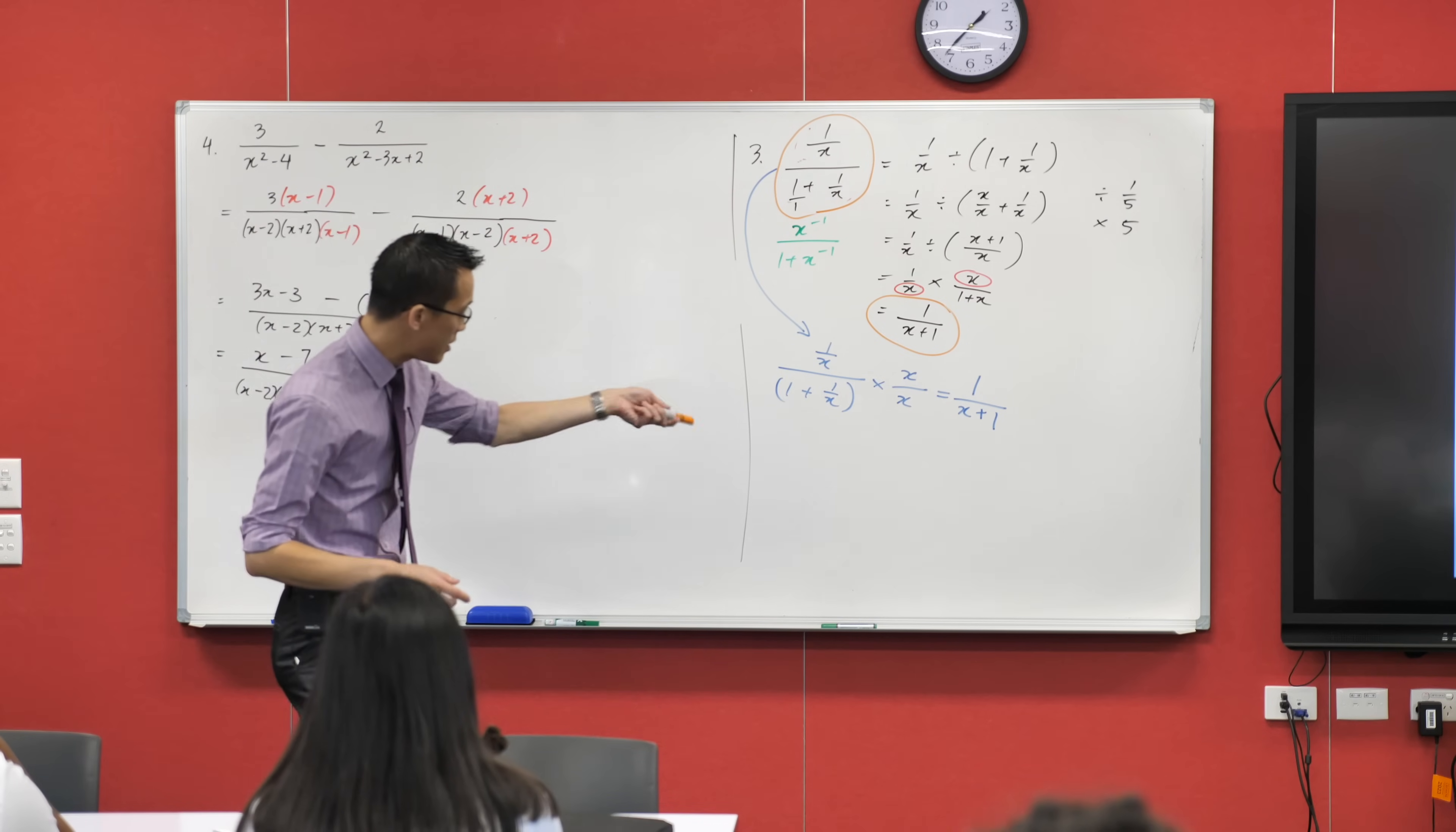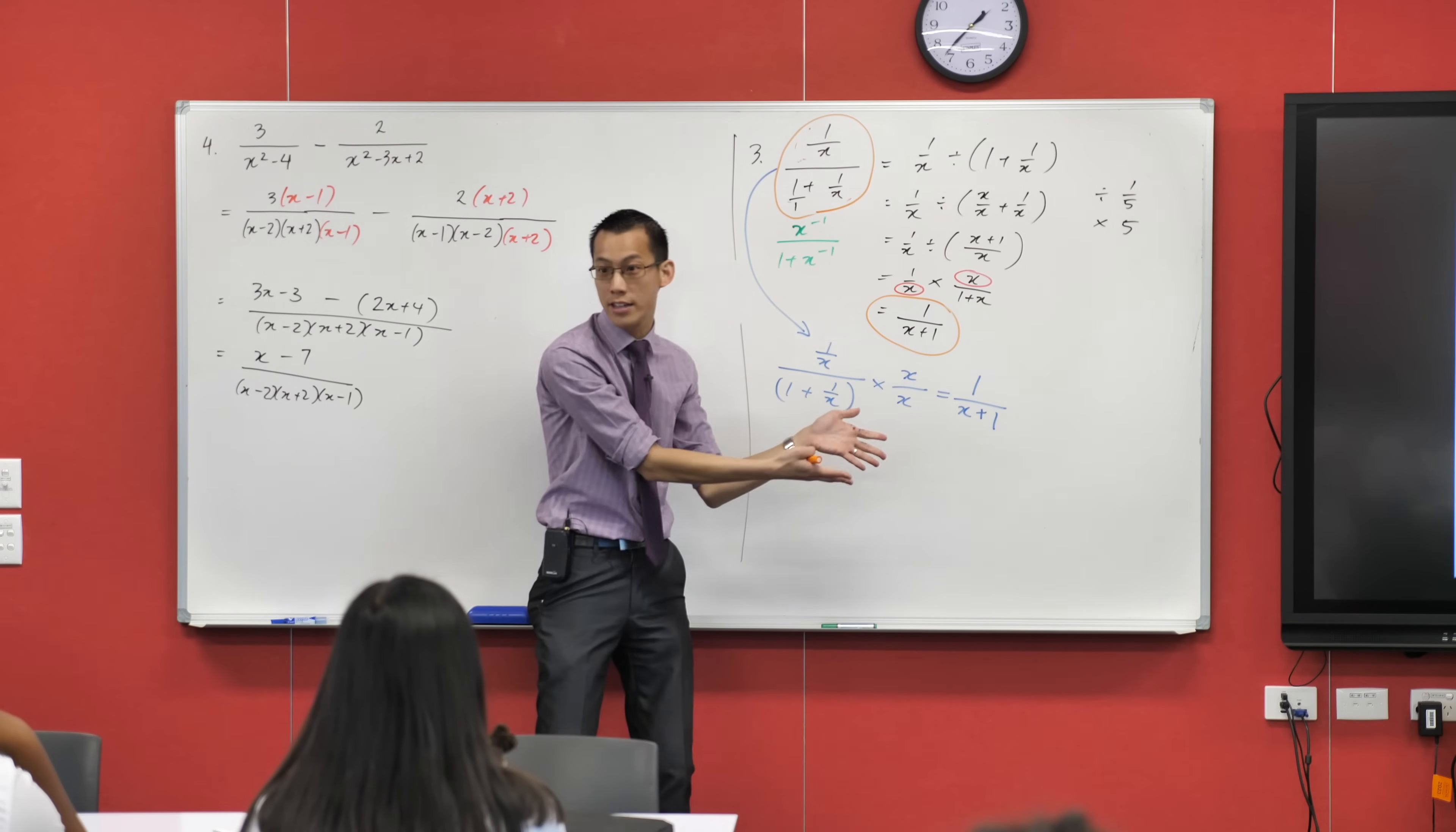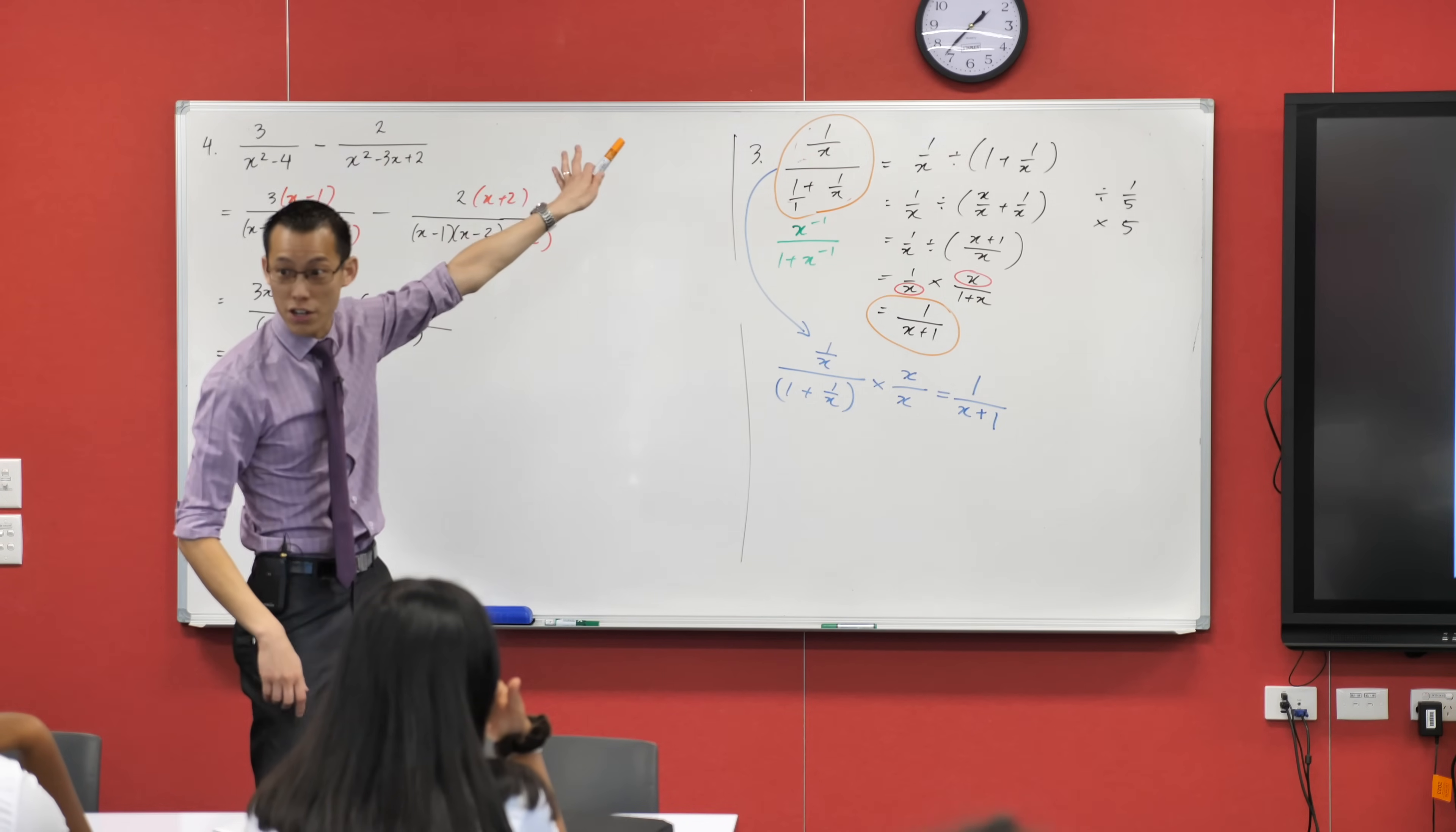When x is equal to 0, what is this expression, the whole thing, what's it equal to? When x equals 0, when I put in, if I were to substitute x equals 0 into here, what would you end up with as the answer? You'd end up with 1, right? 1 divided by 0 plus 1, right? That gives you 1, yeah?